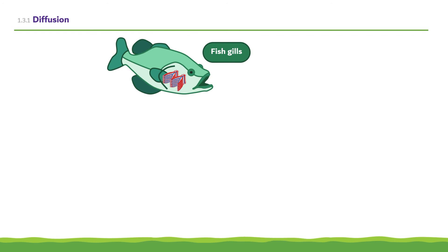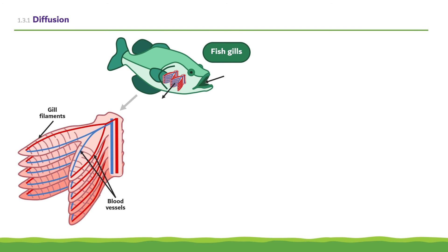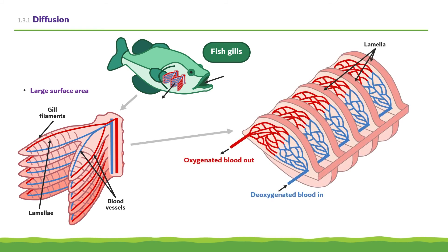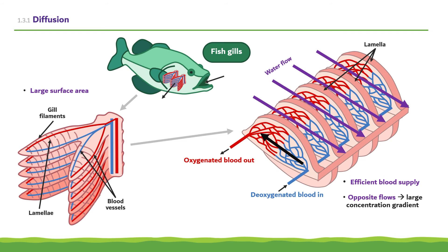In fish, gas exchange occurs in the gills. Oxygen contained within the water enters the fish via its mouth and passes out through the gills, where oxygen diffuses into the blood and carbon dioxide diffuses out into the water. The gills are made up of thin plates known as gill filaments, which provide a large surface area. These filaments are covered in very small structures called lamellae, which increase the surface area even further. The lamellae have a rich blood supply with lots of capillaries, and blood flow is in one direction while water flows in the opposite direction, maintaining the largest concentration gradient possible. The lamellae also have a thin surface to provide a short diffusion pathway.